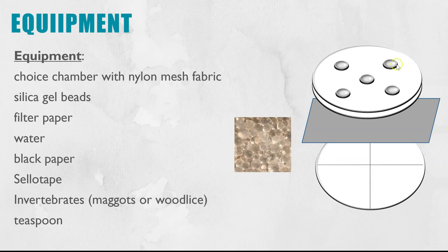The main thing is the choice chamber and this is like a large plastic petri dish. The base is split into chambers, it might be split in half or it could be in quarters, and the lid has holes in the top where you can insert the invertebrates in and also provide some airflow.